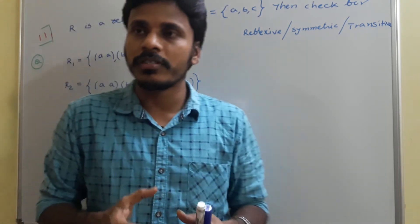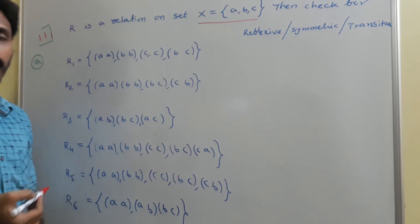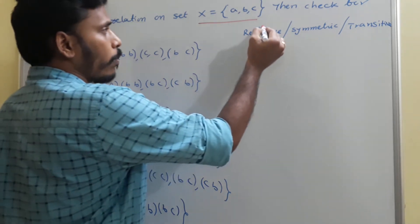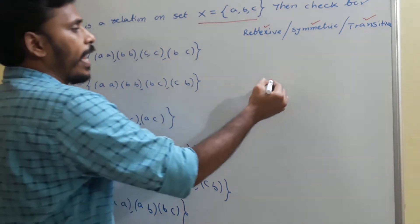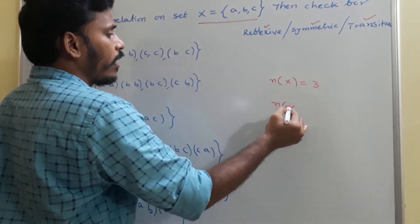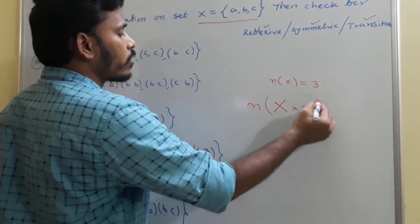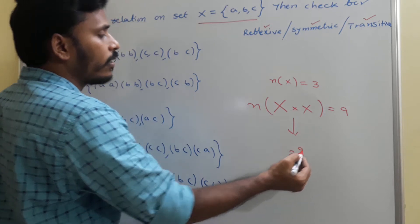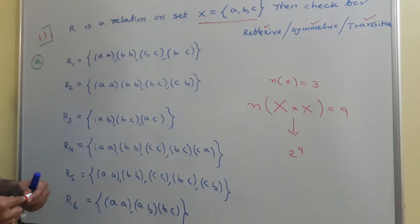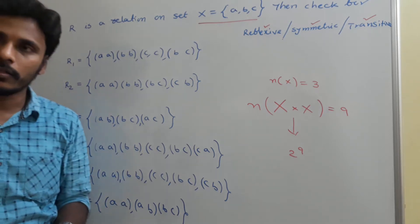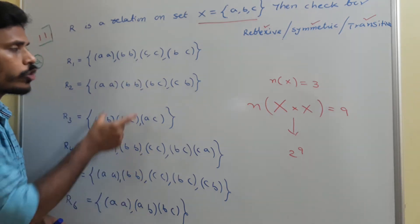I mentioned all these properties with examples in the last class. Now, this is point 11. Here r is a relation on the set X having elements a, b, c. We need to check for reflexive, symmetric, and transitive properties. Since n(X) = 3, n(X × X) = 9 elements, so the number of relations is 2⁹ = 512. I am mentioning some examples here — I have named those relations r1, r2, r3, r4, r5, r6 — and you need to check the three properties for each.